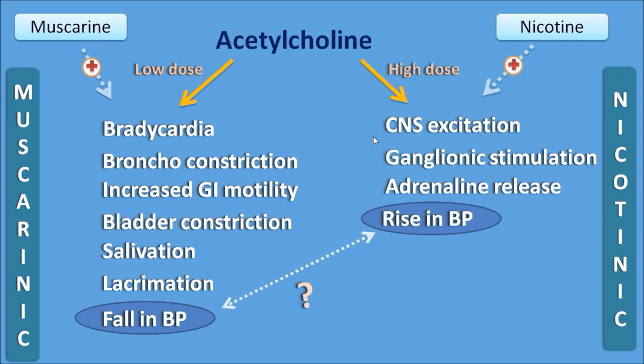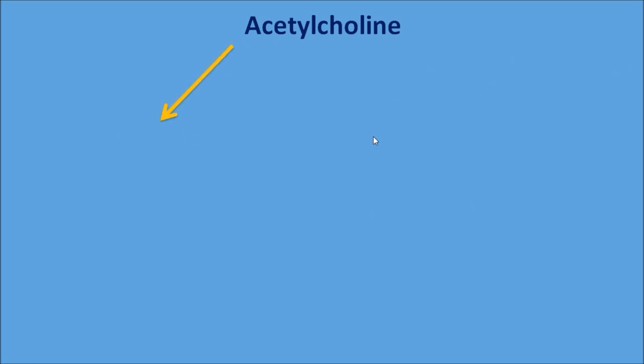So with this we can conclude that acetylcholine is not acting on a single receptor but on two different receptors. One type of receptor is activated at the low dose and another type at the high dose. The first type are activated by muscarine and the second type are activated by nicotine.